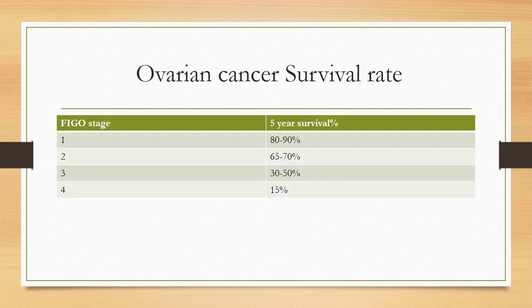Ovarian cancer survival rates: stage 1 — 80 to 90% five-year survival; stage 2 — 65 to 70%; stage 3 — 30 to 50%; stage 4 — 15%.